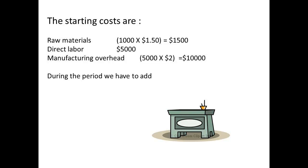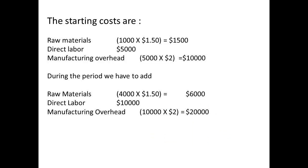We are almost ready to start calculations. Direct labour of $5,000 is included in the starting cost. Starting costs then consist of $1,500 for raw materials, $5,000 for direct labour, and $10,000 of manufacturing overhead. What is added during the period? Direct labour was measured at $10,000, so we have costs during the period of $6,000 for raw materials, $10,000 for labour, and $20,000 for manufacturing overhead.